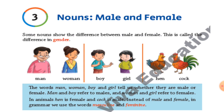And who is female? Like your mom, your sister, your grandmother — these come under female. Man and boy refers to males and woman and girl refers to females. In animals, hen is a female and cock is a male.